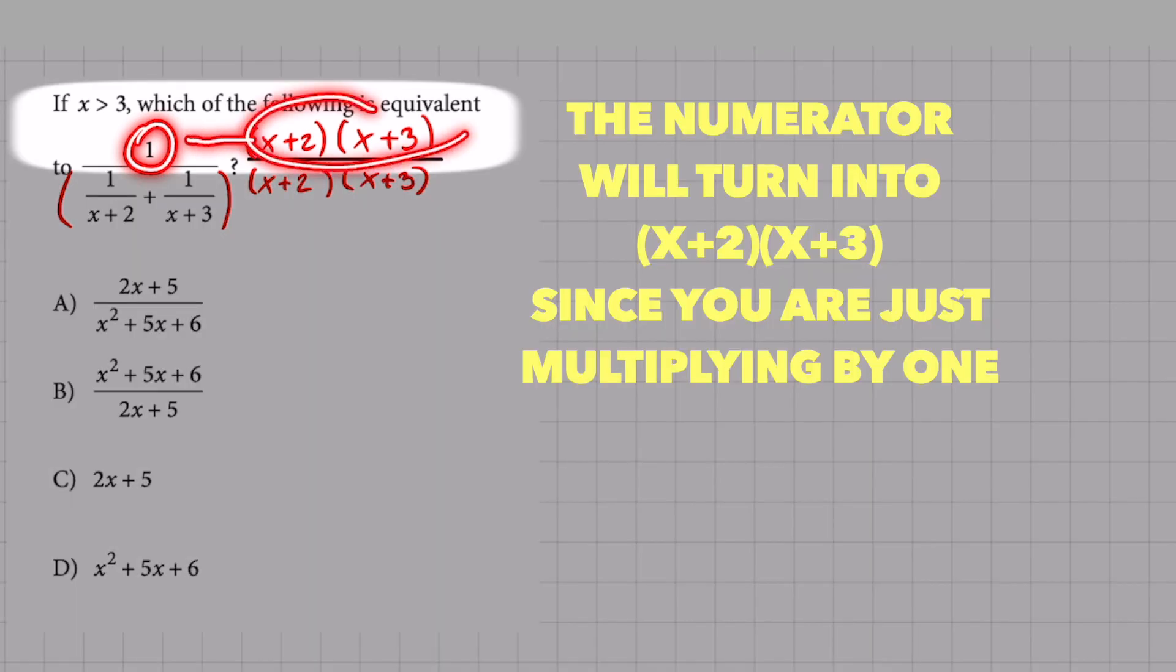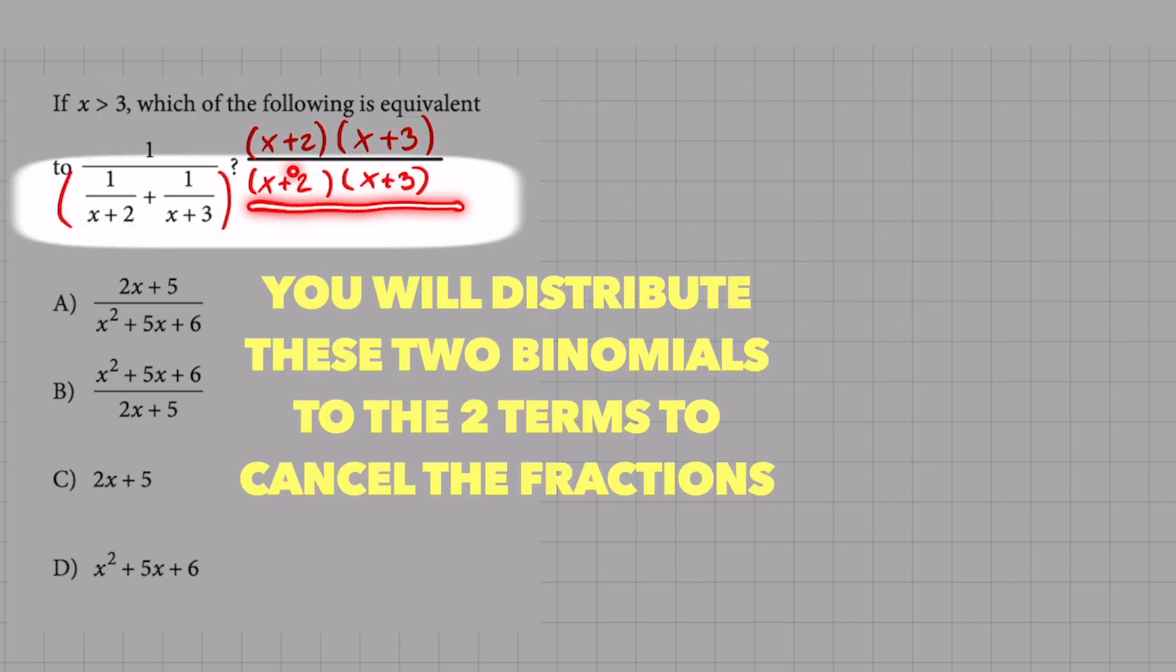1 times this is going to be just the same thing. So it's going to be x plus 2 times x plus 3 at the numerator. The bottom I'm going to have to end up distributing these two binomials to each one of these terms. Here's how it's going to look like.